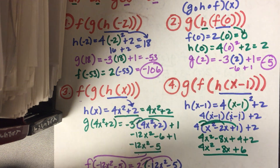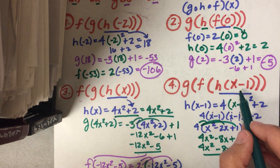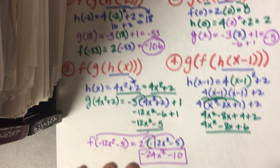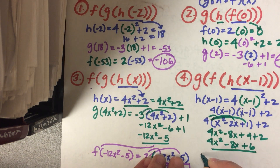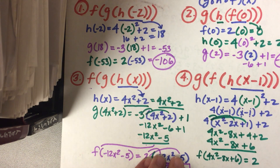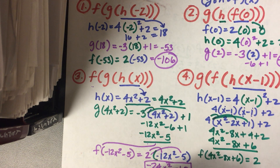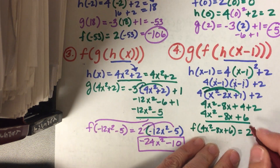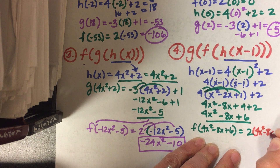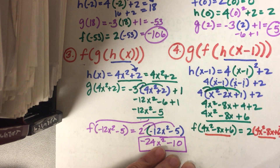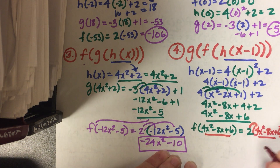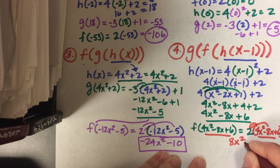That's my first output — h of x minus 1. Now I plug that into f. f of x is 2x, so f of 4x squared minus 8x plus 6 equals 2 times 4x squared minus 8x plus 6. Distributing: 2 times 4x squared is 8x squared, 2 times negative 8x is negative 16x, and 2 times 6 is 12. So I get 8x squared minus 16x plus 12.